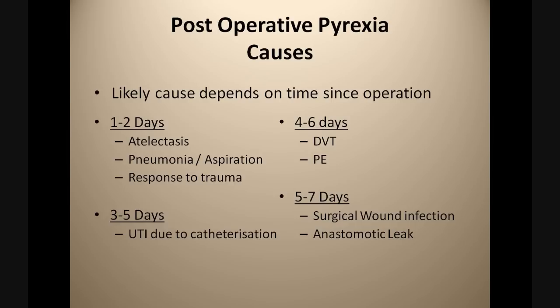Three to five days following the operation, patients sometimes develop urinary tract infections, which may be due to iatrogenic catheterisation. Four to six days, we start seeing symptoms of DVT such as calf swelling, tenderness, oedema and engorgement of superficial veins. Patients may also complain of chest pain and shortness of breath if they have developed a pulmonary embolus. Five to seven days is when we start seeing symptoms consistent with surgical wound infections or anastomotic leaks.